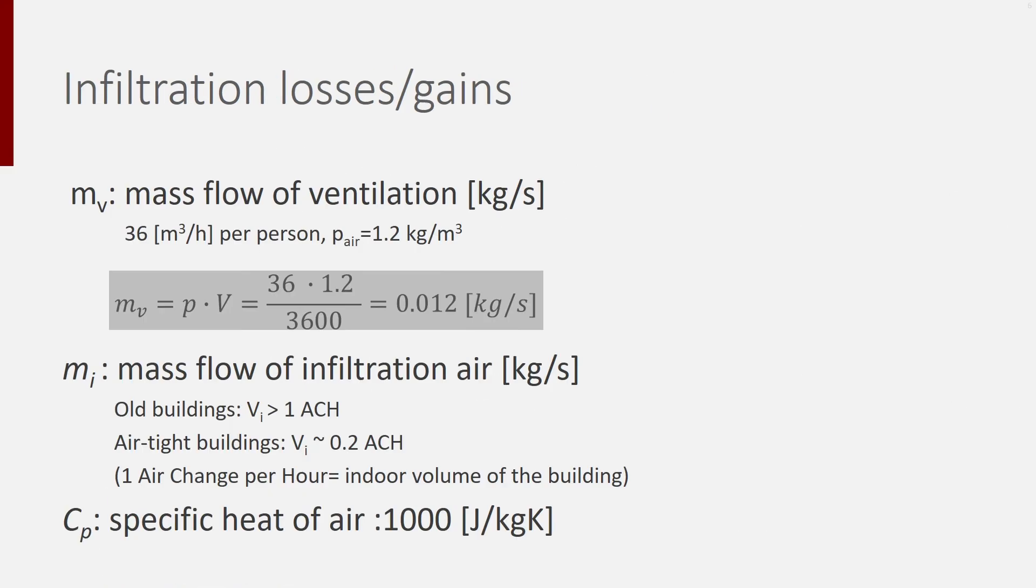In the previous slide, the mass flow rate was used in kilogram per second. However, when we talked about the quantity of fresh air needed earlier in the presentation, we expressed it in volume flow rate, cubic meter per hour. You can convert cubic meter per hour to kilogram per second using the first equation on the slide.